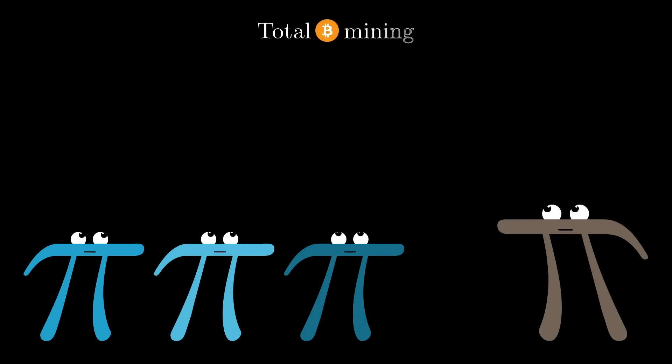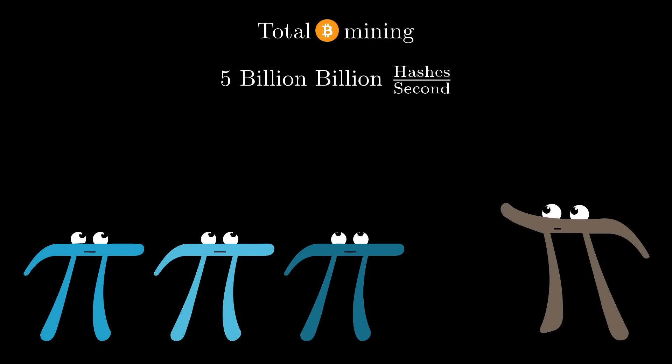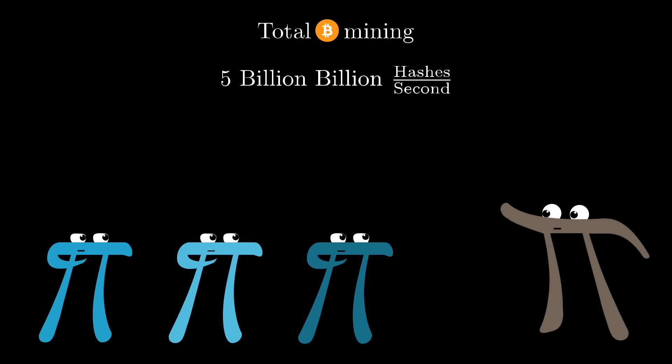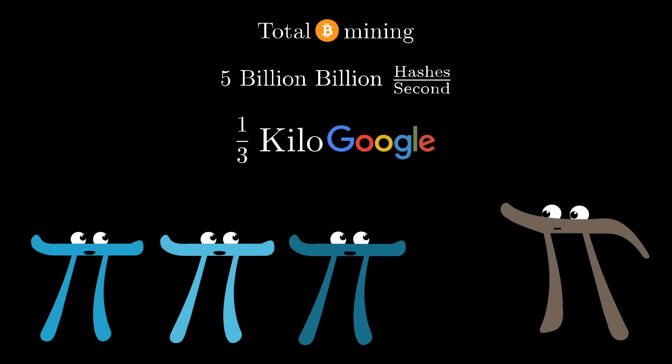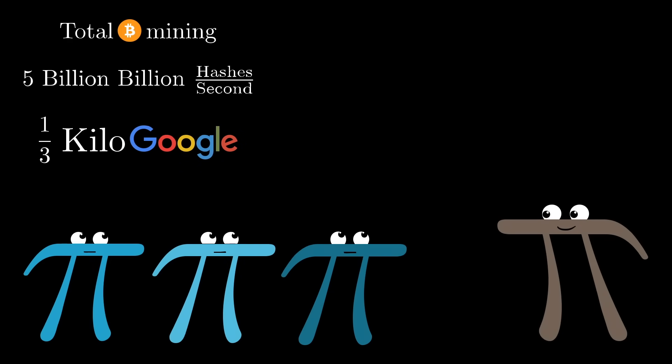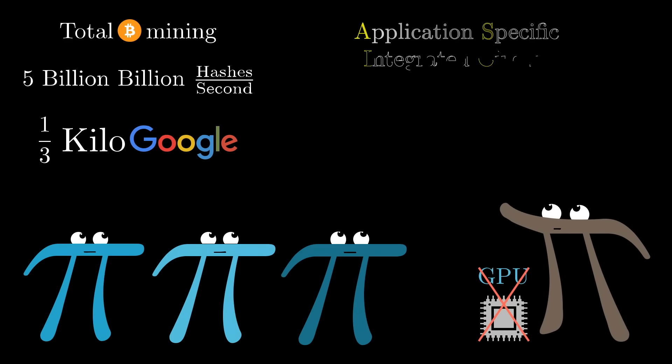By the way, the state of Bitcoin hashing these days is that all of the miners put together guess and check at a rate of about 5 billion billion hashes per second. That corresponds to one third of what I just described as a kilogougle. This is not because there are actually billions of GPU-packed machines out there, but because miners actually use something that's about a thousand times better than a GPU. Application-specific integrated circuits.